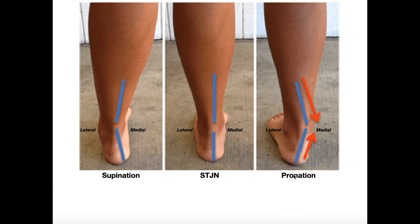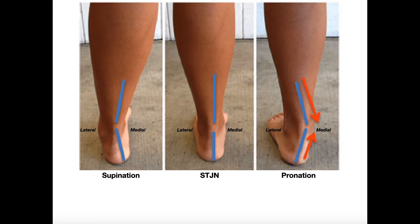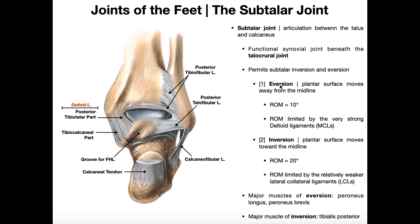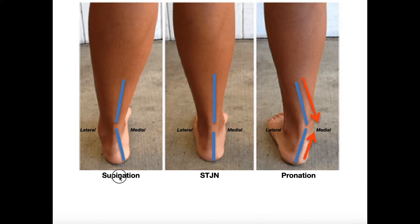Likewise, pronation is also a composite movement. Within pronation, it involves subtalar eversion, but there are some other things involved that we're going to get to in just a little bit. Understand that supination and pronation are really composite movements. Subtalar inversion and eversion are simple movements, but each of these is a part of one of these composite movements.